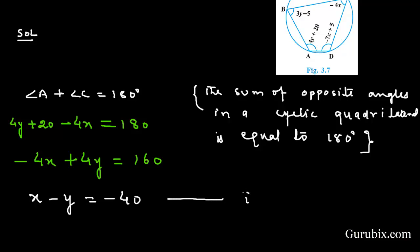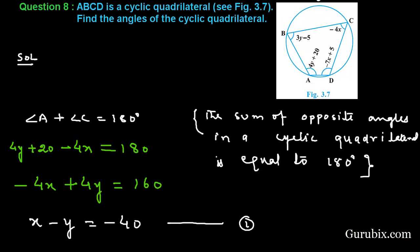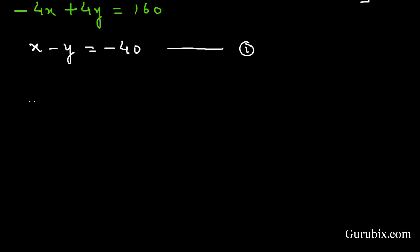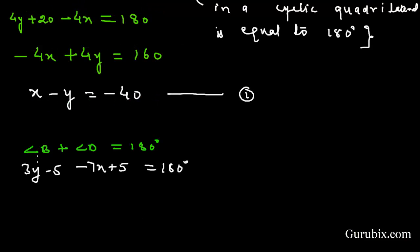Now we apply the same result: the sum of angle B and angle D equals 180 degrees. Angle B is given as 3y - 5 and angle D is -7x + 5. Adding them: -7x + 3y = 180, since the 5s cancel out. This is equation number two.